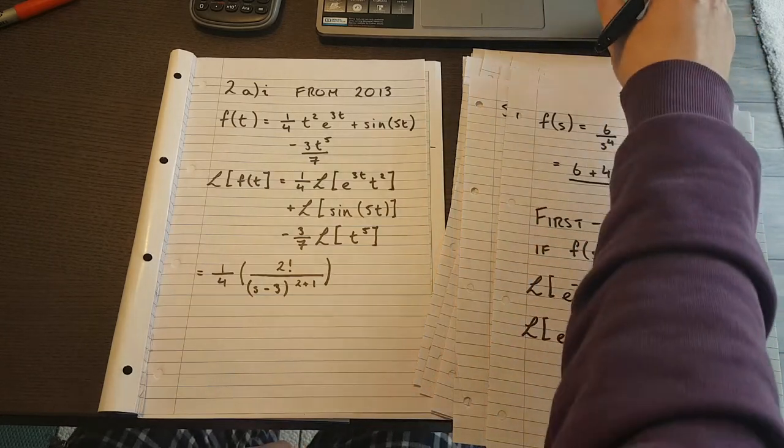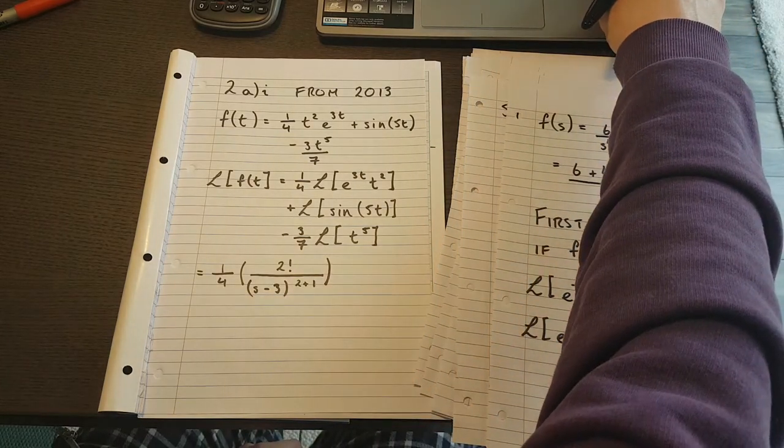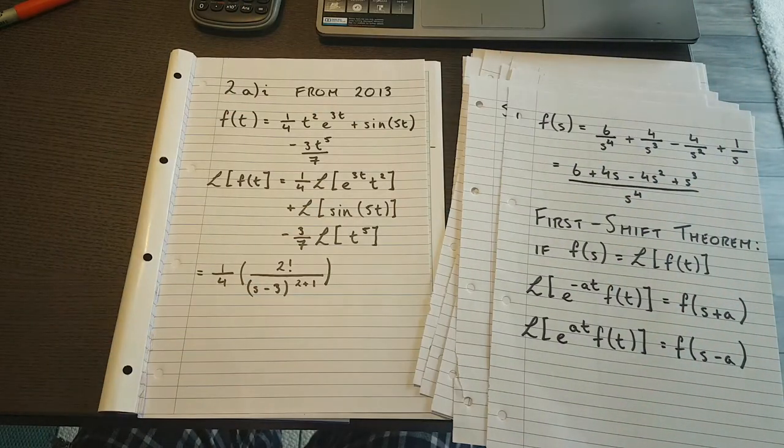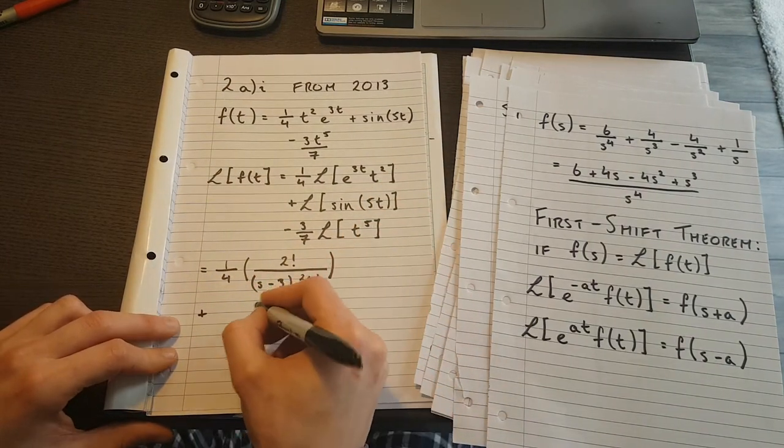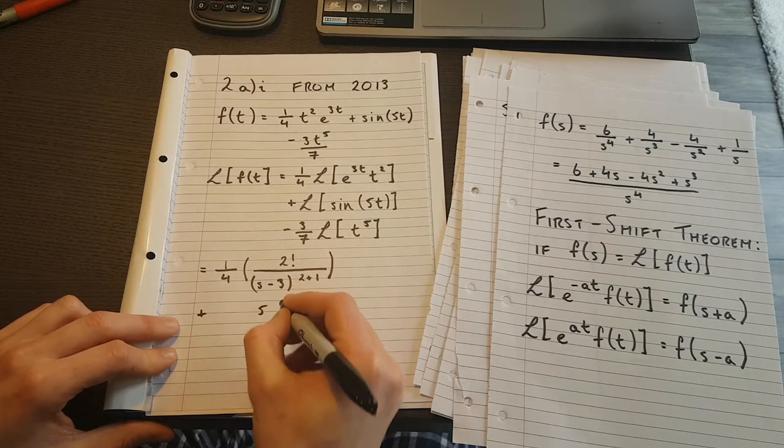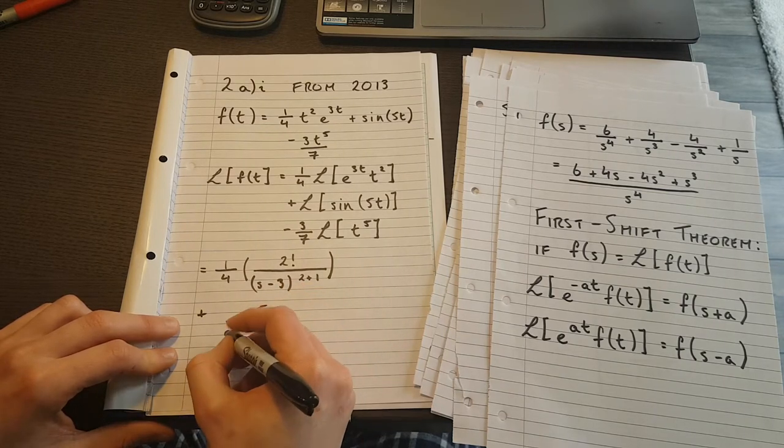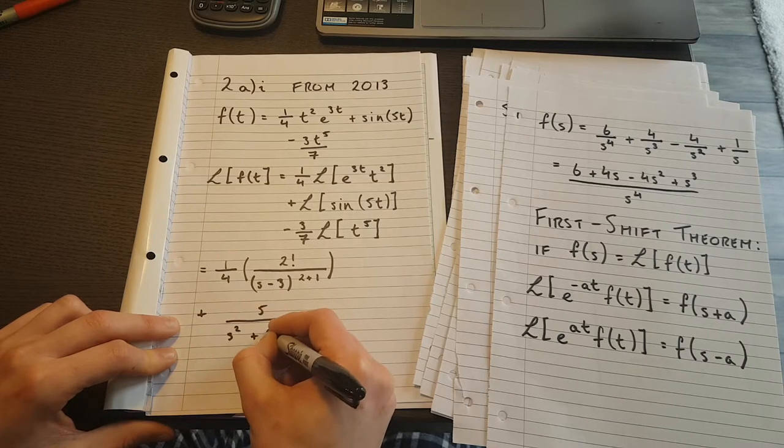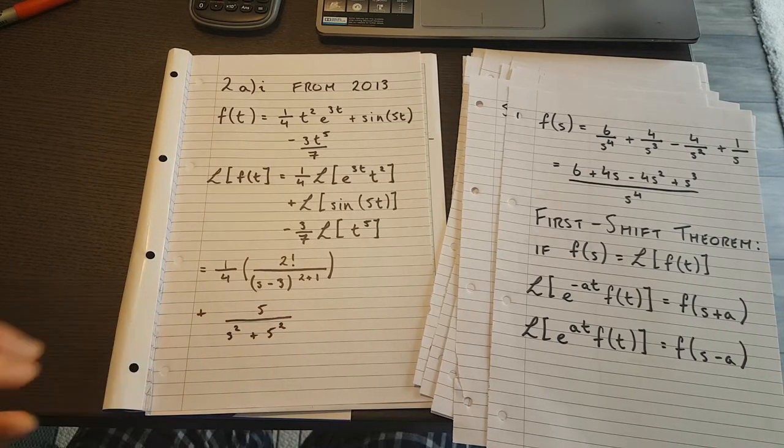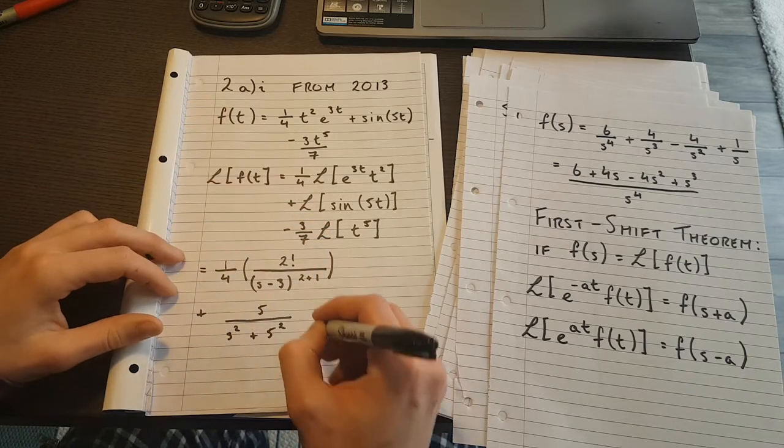So very doable and very manageable. And then I have plus the sine term, which is just going to be the 5, and then I have s² on the bottom, and I have 5², one that we've seen before.